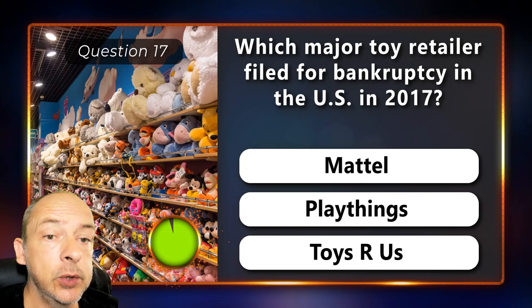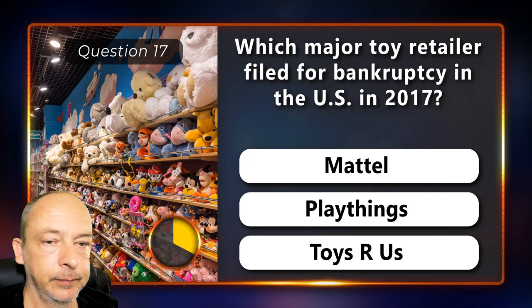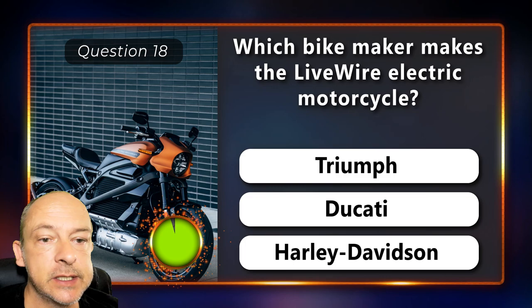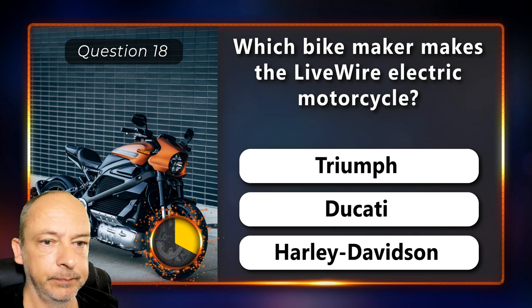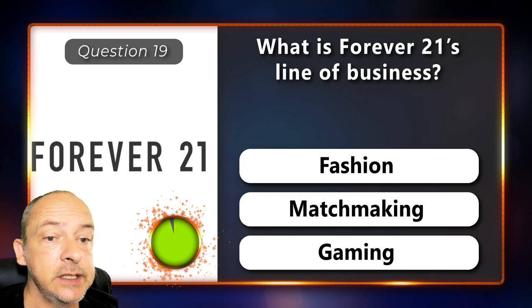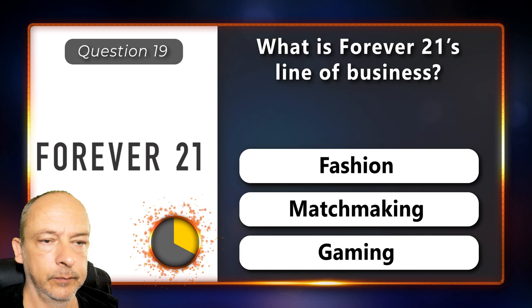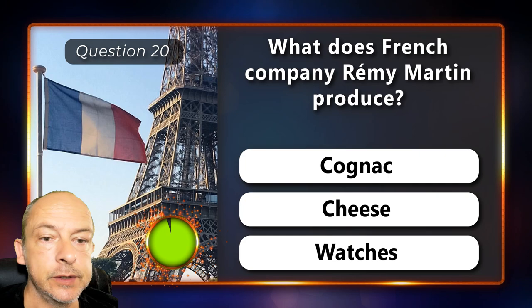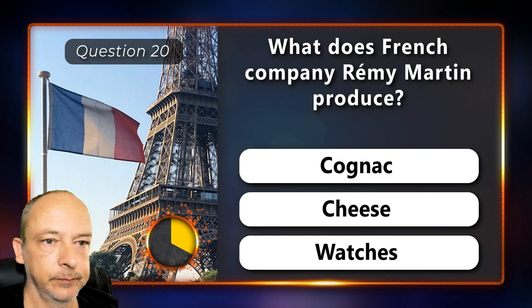Which major toy retailer filed for bankruptcy in the US in 2017 — was it Mattel, Playthings or Toys R Us? Toys R Us. Which bike manufacturer makes the Livewire electric motorcycle — Triumph, Ducati or Harley-Davidson? Harley-Davidson. What is Forever 21's line of business — is it fashion, matchmaking or gaming? The correct answer is fashion. What does French company Remy Martin produce — is it cognac, cheese or watches? Cognac.